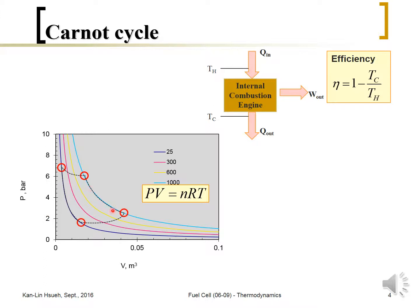The thermal energy causes volume expansion, and the pressure reduces as mechanical work is done on the external piston. Then, if we can quickly remove the heat from the gas and cool it from 1000°C down to 25°C, the volume will shrink and the piston moves back to its original position.